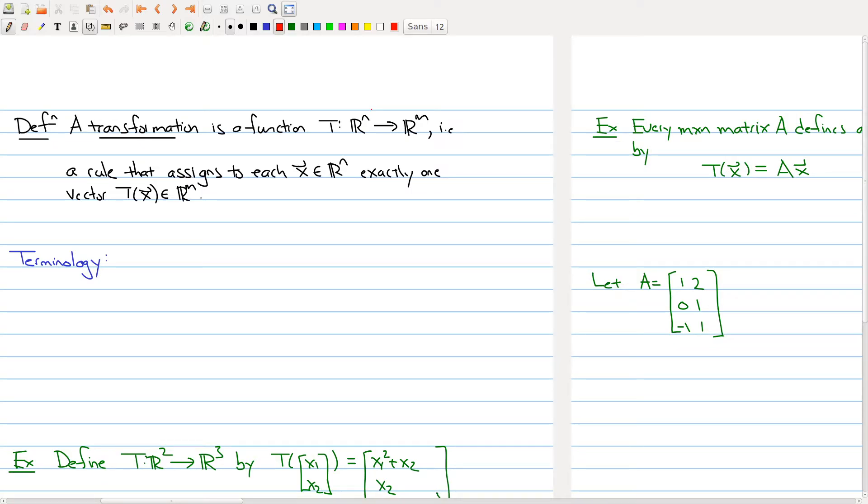And a transformation is just any function that takes any vector on this side, the Rn, to a vector on the other side. So a transformation is a rule that assigns to each vector x in the Rn exactly one vector on the other side. And we use this notation, Tx, to mean the vector that we get after we plug it into the function.